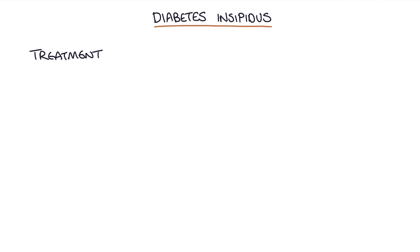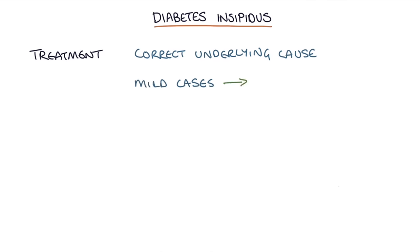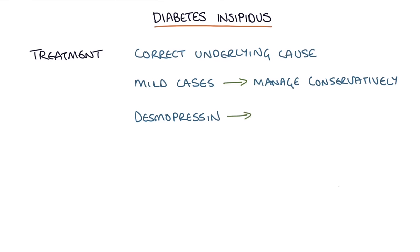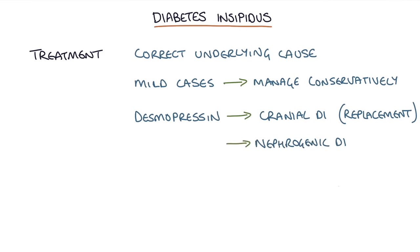How do you treat diabetes insipidus? If possible, it's worth correcting the underlying cause. Often mild cases can be managed conservatively without any treatment. Desmopressin, which is synthetic ADH, can be used as a treatment in cranial diabetes insipidus to replace the ADH they're not making. In nephrogenic diabetes insipidus it can also be used, but often very high doses are required and close monitoring is necessary to get an adequate response from the kidneys.